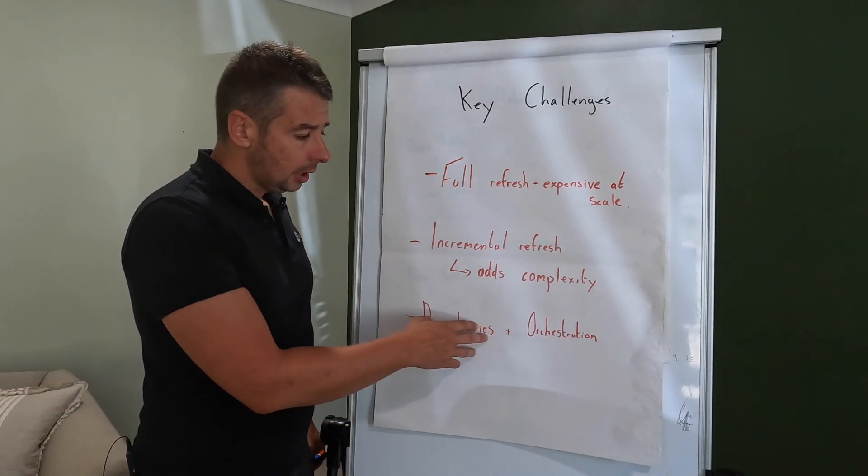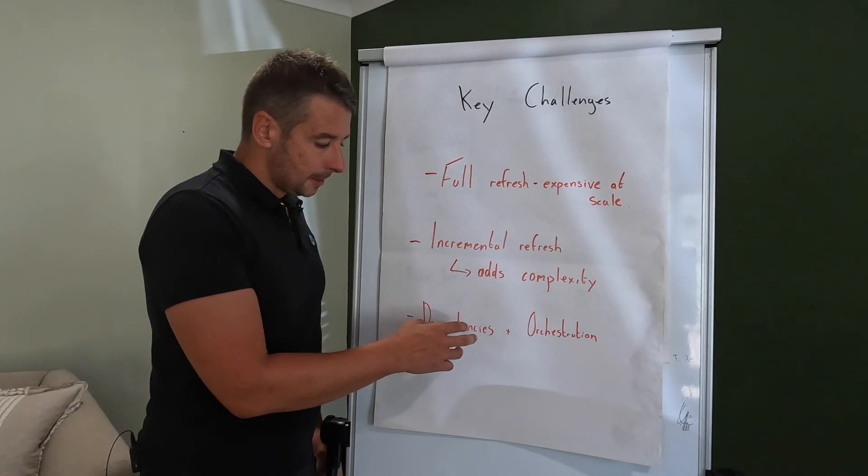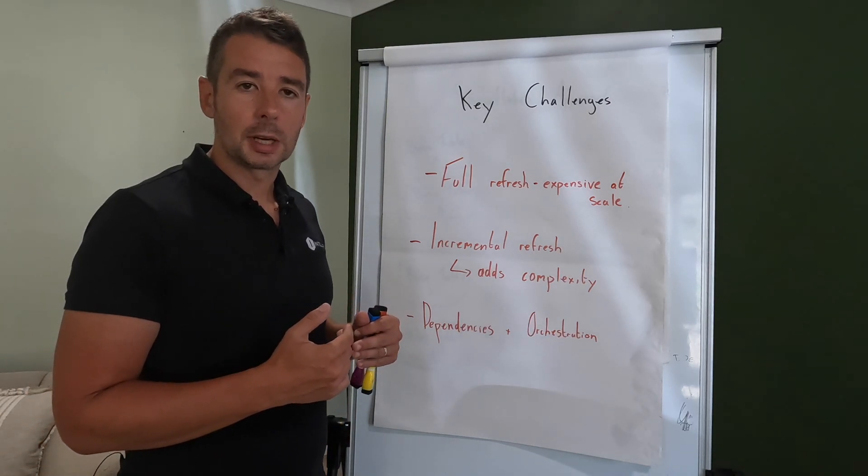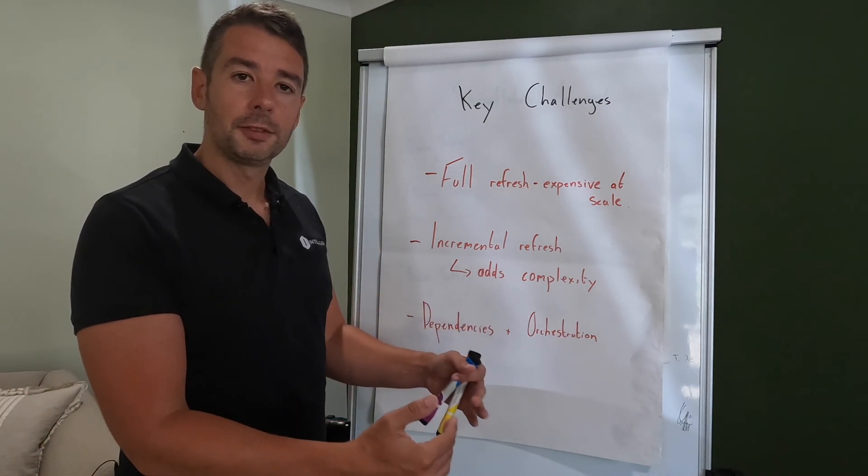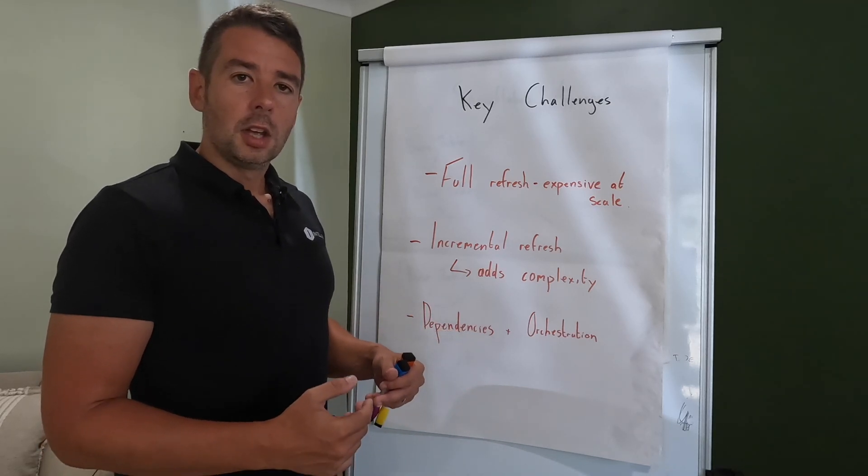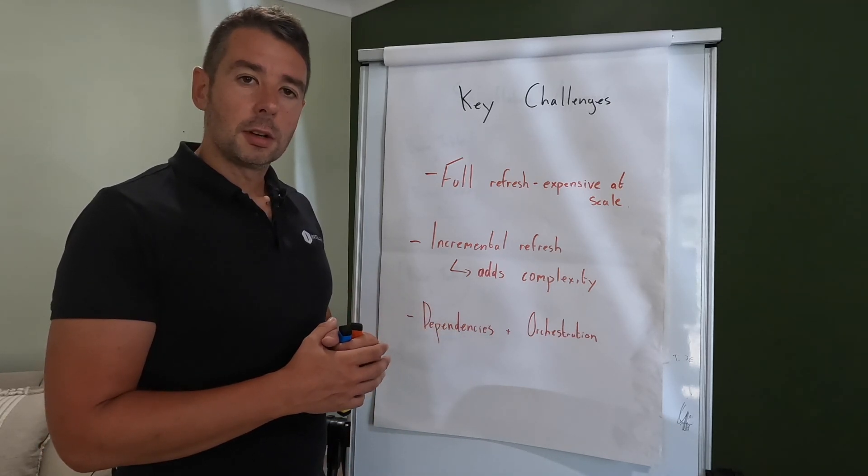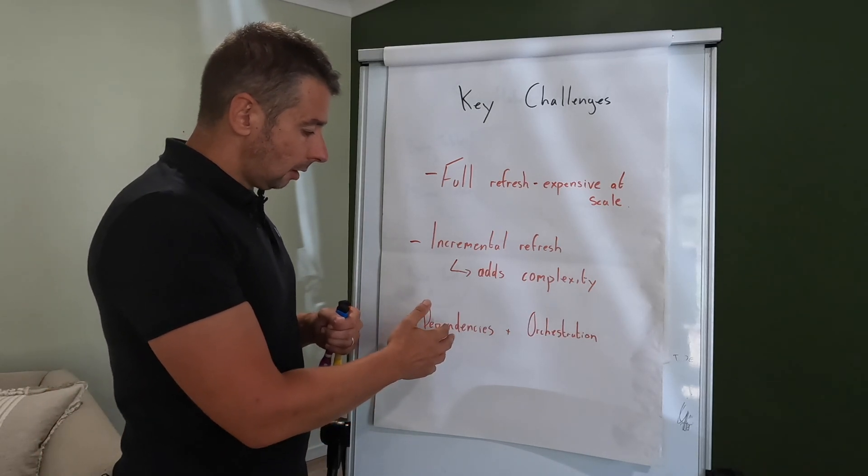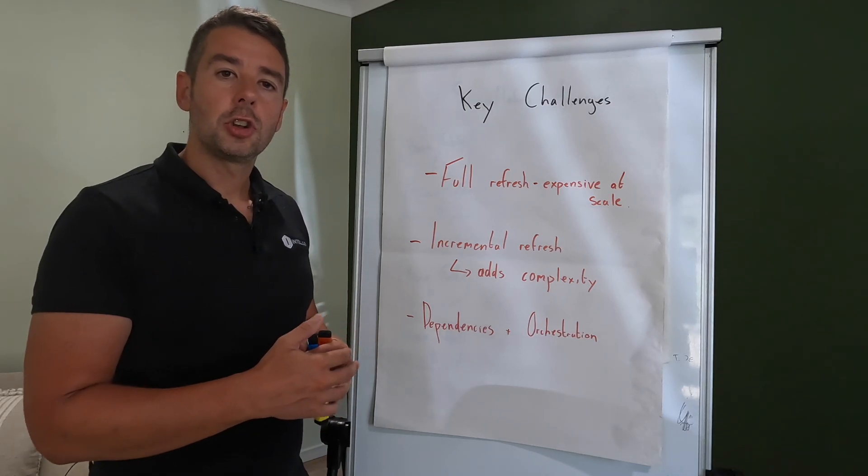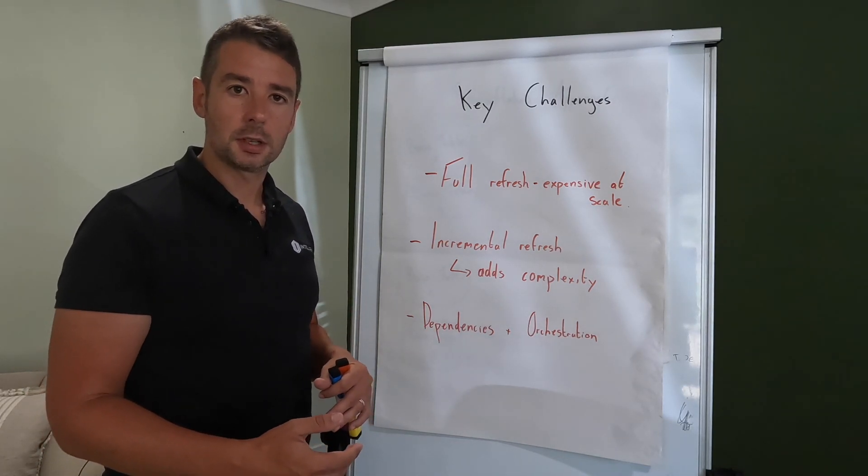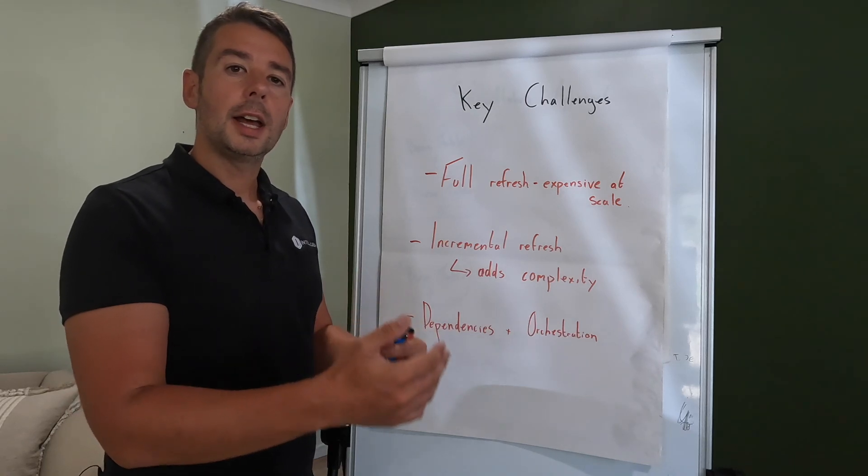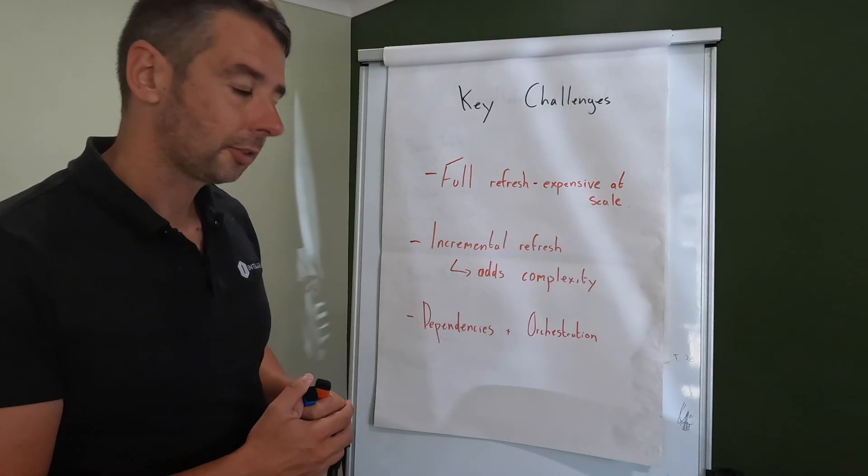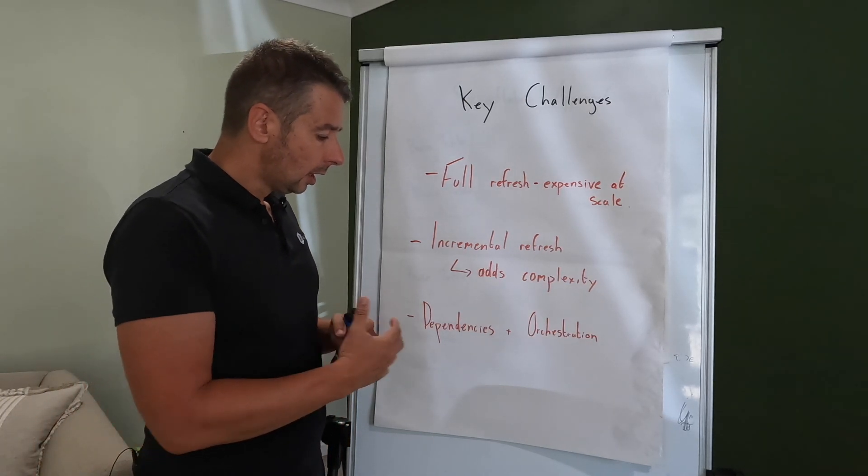Finally then the other key challenge I'll call out is around dependency management and orchestration. Some tasks within your data pipelines can and should run in parallel if they're not dependent on each other and make really good use of the compute available to you, certainly in a modern cloud data platform. But in other circumstances certain tables will have to be loaded in a sequence. So for example you may need to land your data upfront before loading your dimensions and then load your facts if you're following a Kimball style schema model. And what do you do if something fails upstream? What do you do if a table fails and you've got downstream tables depending on that?